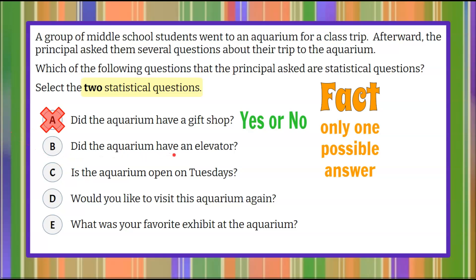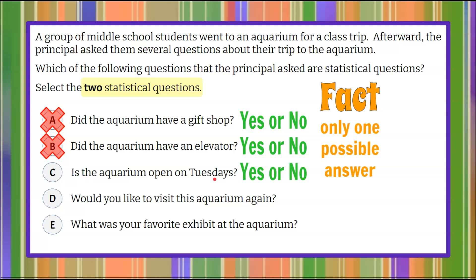B: Did the aquarium have an elevator? Again, yes or no — it did or did not. The answers will not vary; it's only one possible answer. They all went to the same aquarium, so we'll eliminate B. C: Is the aquarium open on Tuesdays? Again, yes or no. There's no other answer — it either was or it wasn't. So again, that's a fact, not an opinion, not a variable answer.